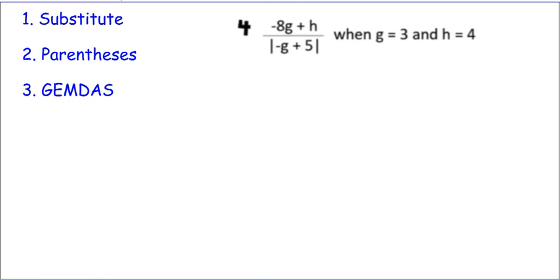Our last example is a fraction bar. So anytime we see g, we're going to put 3. Anytime we see h, we're going to put 4. So negative 8 times 3 plus 4 over the absolute value of negative 3 plus 5.